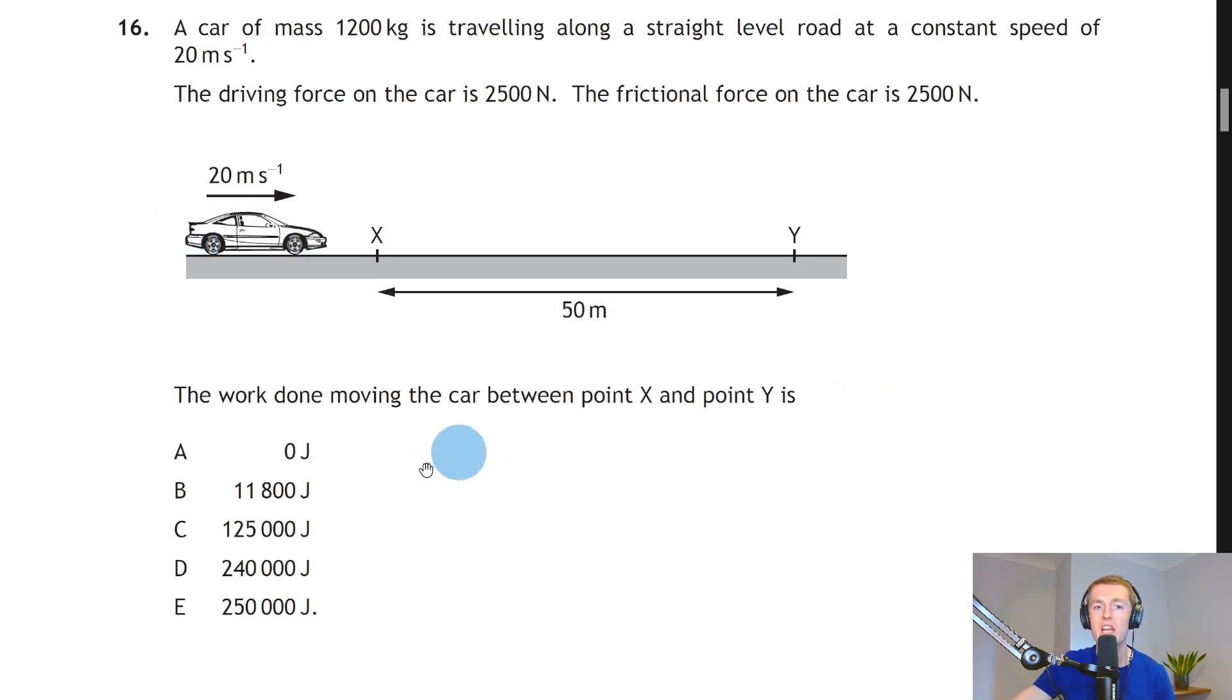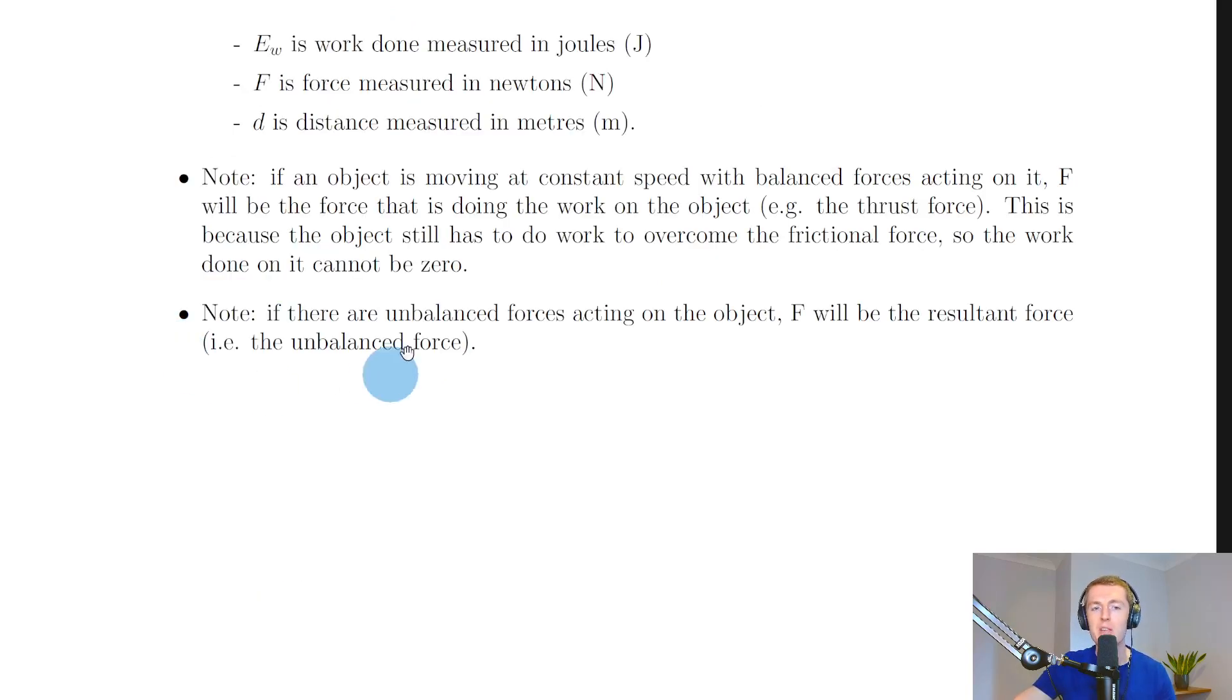Instead of the answer being zero joules, which a lot of pupils wrongly thought, we would calculate this as Ew equals F times d to get 2500 times the 50 meters, and that should give you an answer of C in this case, 125,000 joules.